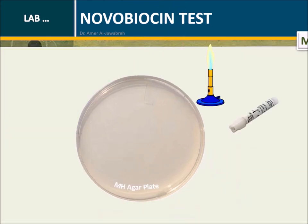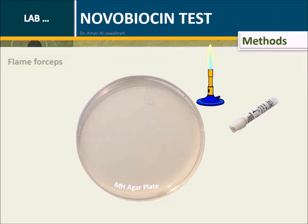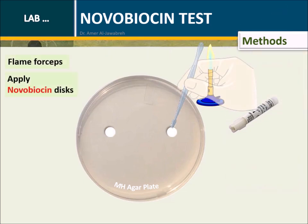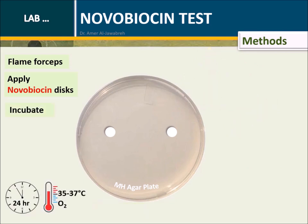Methods: Under aseptic technique, apply two discs of 5-microgram Novobiocin and press gently. Incubate aerobically at 35 to 37 degrees centigrade for 24 hours.